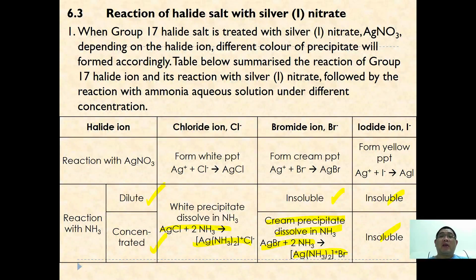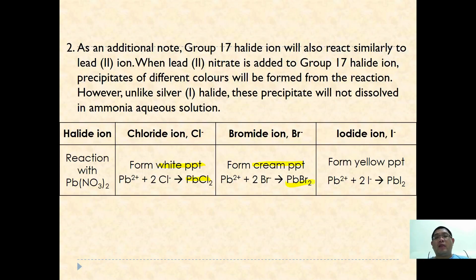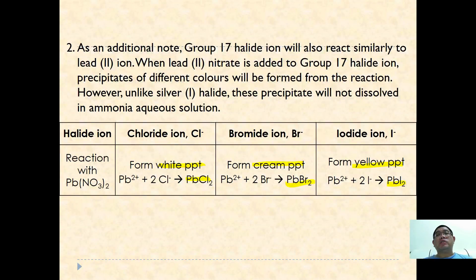Another similar observation occurs when halides are reacted with lead salts. Lead chloride gives a white precipitate, lead bromide gives a cream precipitate, and lead iodide gives a yellow precipitate — similar to the silver halide results. However, unlike silver halides, lead halides will not dissolve in excess ammonia aqueous solutions.